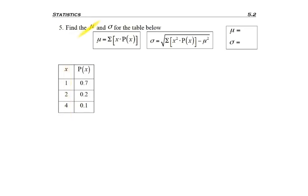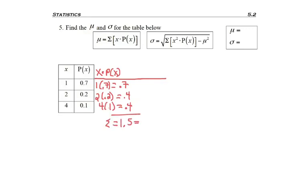Okay, so asked to find the mean. I've copied the formula again for us. And my first goal is to do the inside of the formula, which is to multiply the X times the probability. So as I multiply across the first line, I get 0.7. Across the second line, I get 0.4. And multiplying across the third line, I get 0.4. But now I need to add those values up. And I get an average of 1.5.